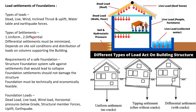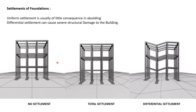Now let's discuss about the types of settlements. There are two types: uniform and differential. Differential settlements must be minimized — it depends on the soil condition and distribution of the loads on columns supporting the building. Requirements of a safe foundation: the structure-foundation system must be safe against settlements that would lead to collapse, foundation settlement should not damage the structure, and the foundation must be technically and economically viable. The three settlement types are: no settlement, total settlement, and differential settlement.